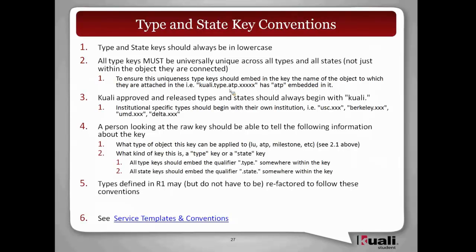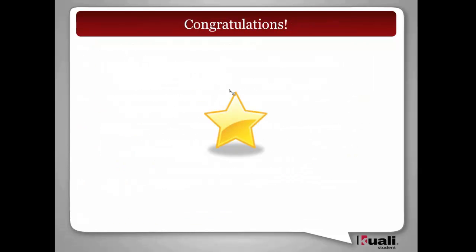An implementing institution may say this is a new type and they'd like it to start with 'kuali' because they think other people would use it, but then they should really talk to other schools to make sure it makes sense. If they just want to create something for a one-off thing, just prefix it with their school name. A person looking at the key should be able to read it — it's not readable to a business user, but a programmer should be able to look and if that thing gets dumped out in the code, be able to say: this is a type key, this is a state key, this is the object it applies to, and roughly what it's talking about.